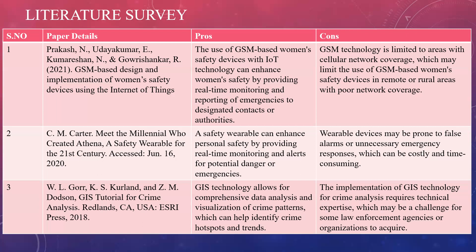The third paper by W.L. Glor, K.S. Kerland, and Z.M. Dodson is titled 'GIS Tutorial for Crime Analysis,' published in Redlands, CA, USA in 2018. The pros are that GIS technology allows for comprehensive data analysis and visualization of crime patterns, which can help identify crime hotspots and trends. The consequence is that implementation of GIS technology for crime analysis requires technical expertise, which may be a challenge for some law enforcement agencies or organizations to acquire.